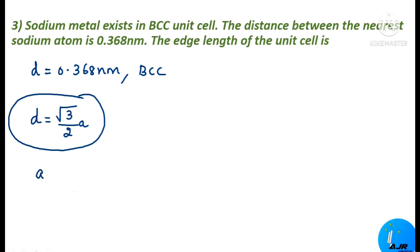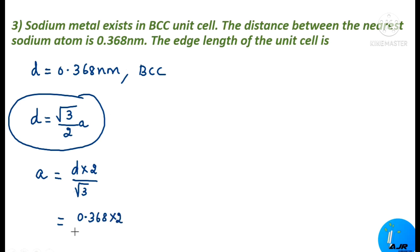Let us rearrange the formula for A. A = D × 2 / √3. Substituting the value: A = 0.368 × 2 / 1.73 = 0.425 nanometers.